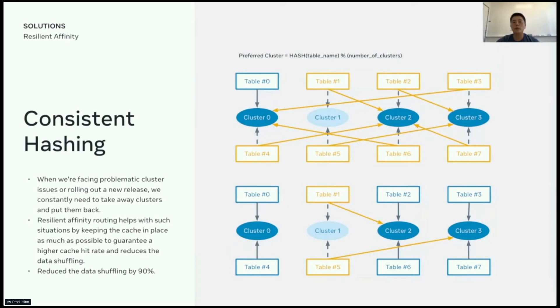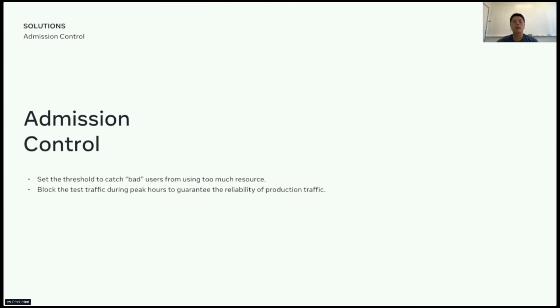Therefore, we introduced consistent hashing, which basically when a cluster is taken out, we pretend it still exists. Only the queries which are supposed to land on this particular cluster will be redirected to a new one. This routing strategy helps keeping the cache in place as much as possible. And we reduced the data shuffling by 90%.